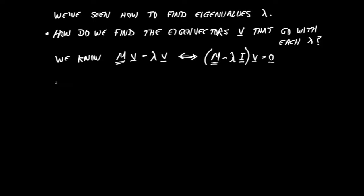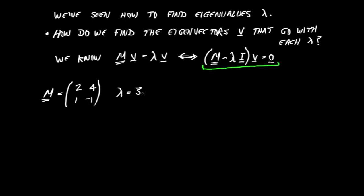I find it's more useful to use the form on the right-hand side. Let's look at a particular example. We'll have the matrix 2, 4, 1, minus 1. We looked at this before and found that its eigenvalues are equal to 3 and minus 2. What we're going to do now is take those values one at a time and figure out an acceptable eigenvector.